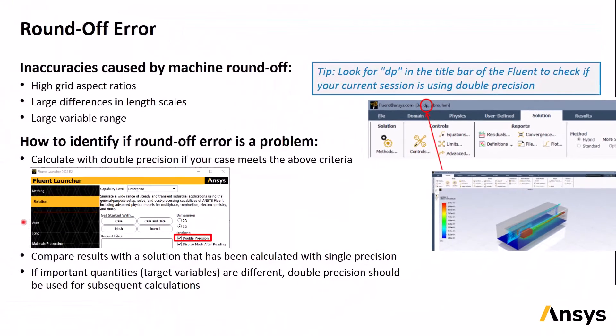The way you can tell if there are round-off errors is to define important quantities in the calculation, which we'll call target variables, and these might be the lift coefficient on an airfoil or the temperature at a certain location. Calculate the solution once with single precision, and once again with double precision, and compare the values of the target variables. If they are different, then double precision should be used for subsequent calculations.